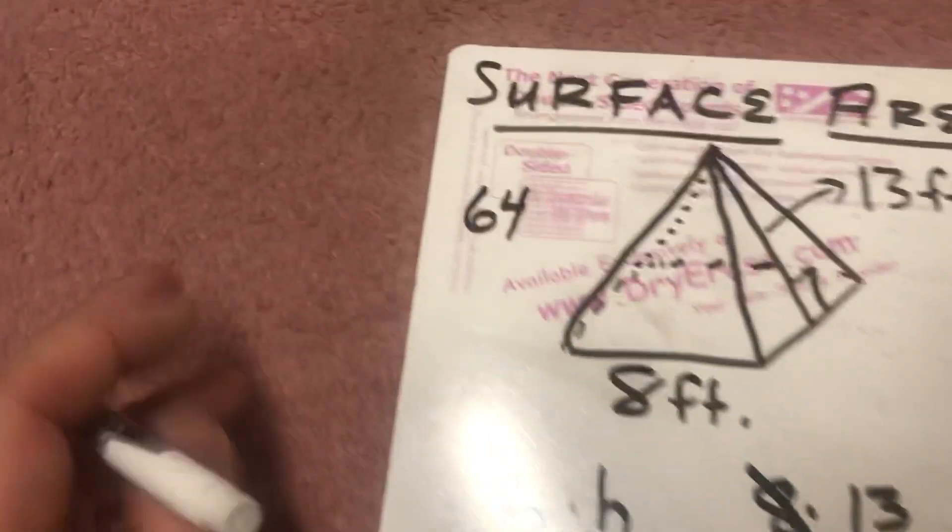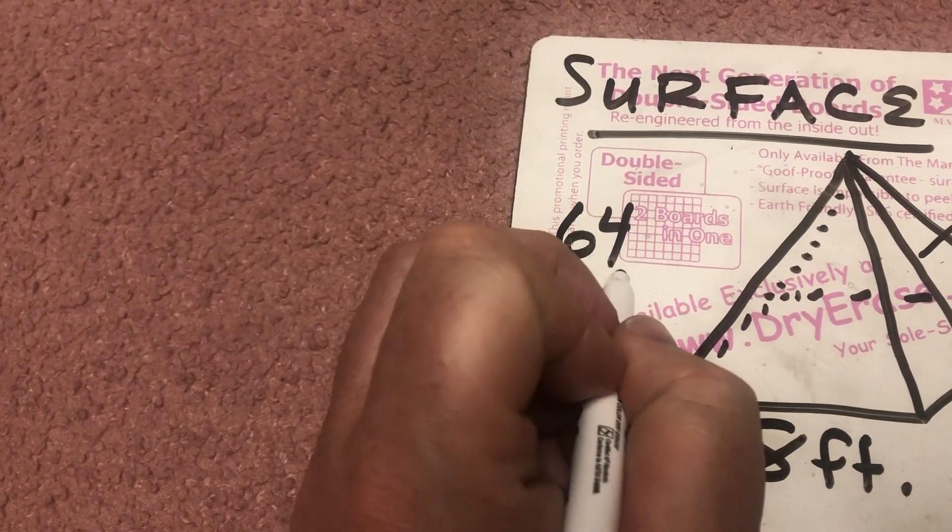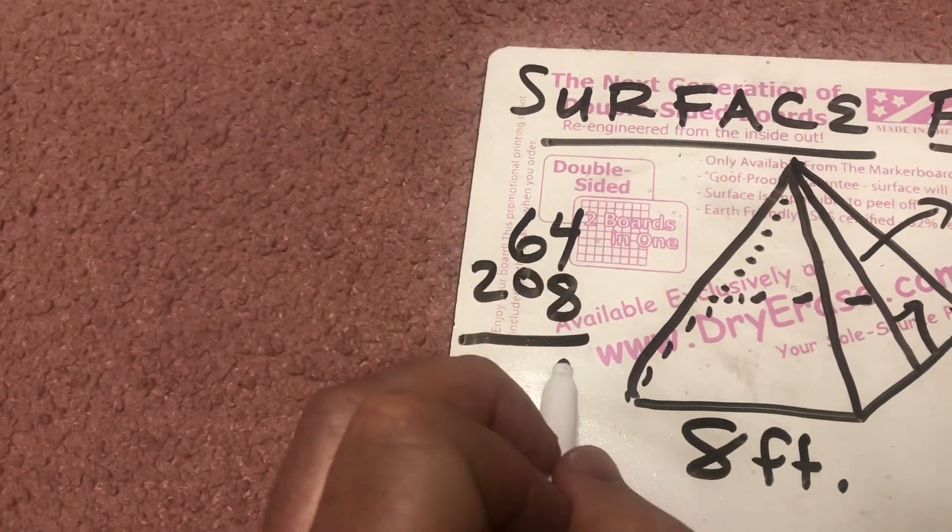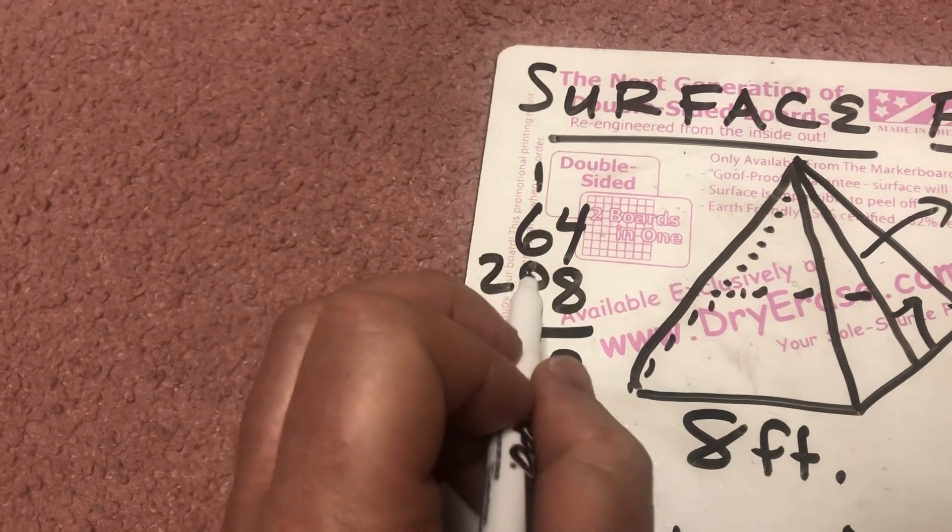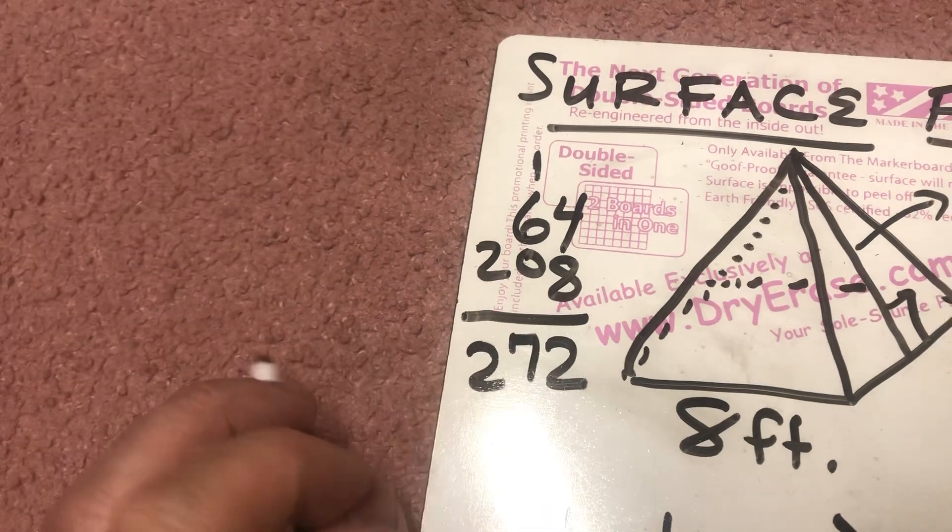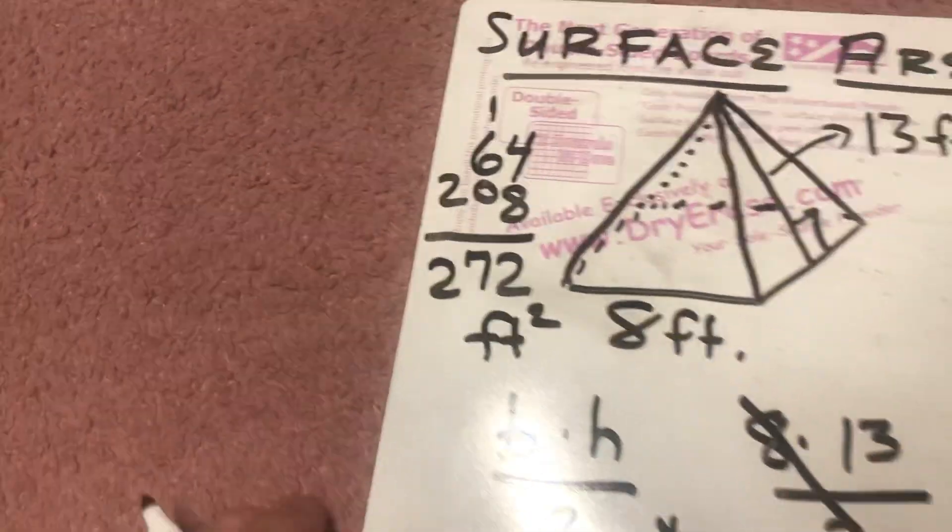Now, I need to combine that with the 64. So I'm going to come over here, 208. I'm going to combine that with the 64. 4 plus 8 is 12. Put the 2 down, carry the 1. 1 plus 6 is 7, plus 0 is 7. Nothing in 2 is 2. 272 square feet.